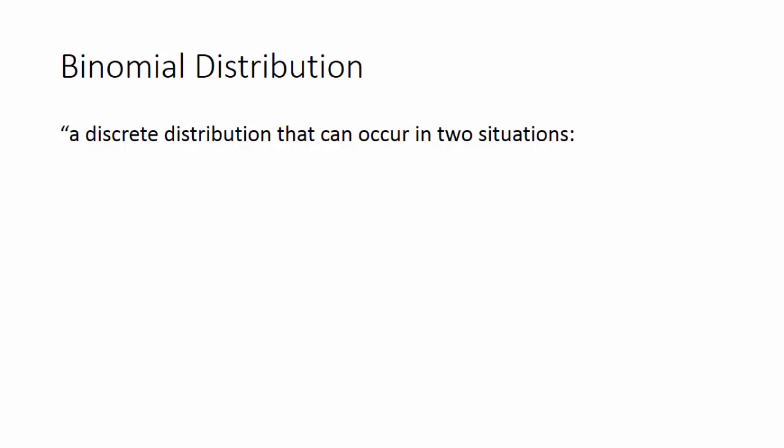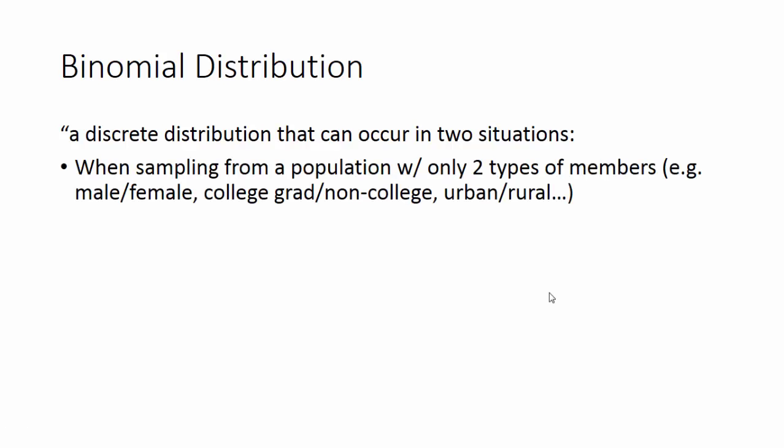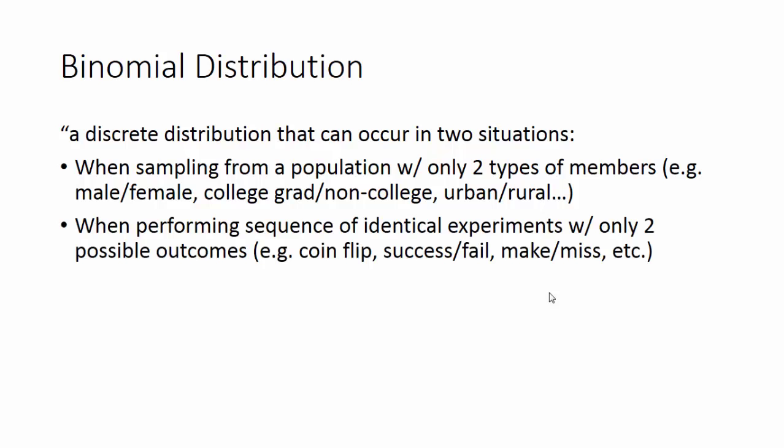Here's the definition from the textbook: the binomial distribution is a discrete distribution that can occur in two situations — when sampling from a population with only two types of members, such as male and female, college grad vs. non-college grad, or urban versus rural; or when performing a sequence of identical experiments that has only two possible outcomes, like a coin flip, win or lose, or succeed or fail to meet a sales target. The name 'binomial' comes from there being only two possible outcomes for an event.